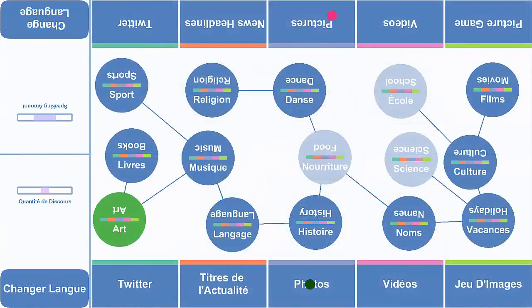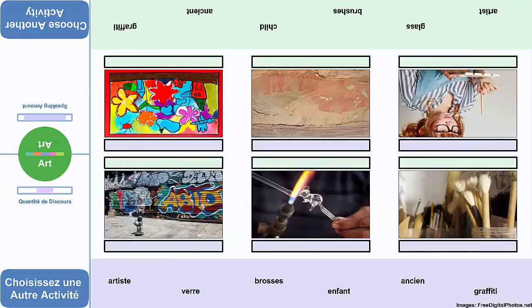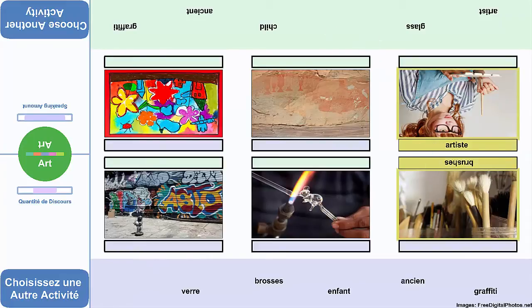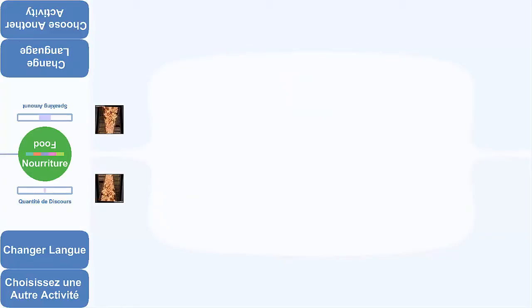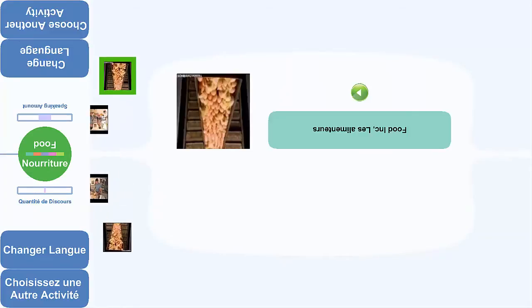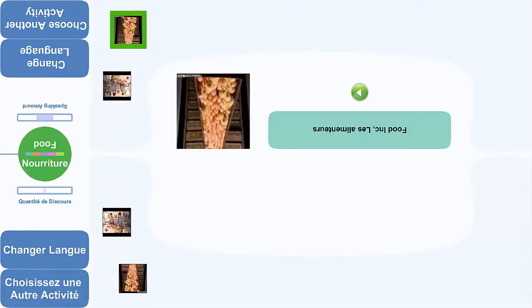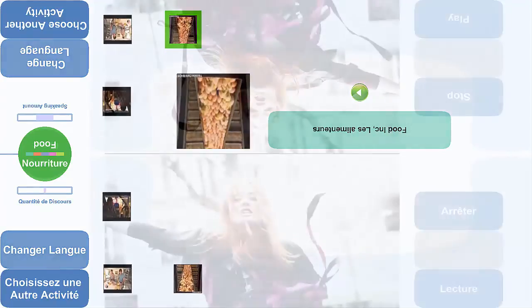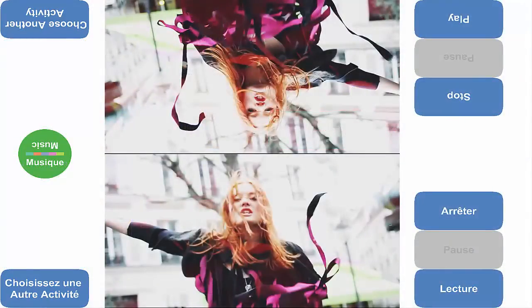In the picture activity, photos are downloaded from Flickr and displayed to inspire conversation between partners. We also included a collaborative picture game activity where learners work together to match words with their respective picture representation. In the original video activity, we employed the use of the YouTube Data API and VLC to download and display videos. When learners watch a video, the same video is mirrored to allow both learners to view the exact same content.